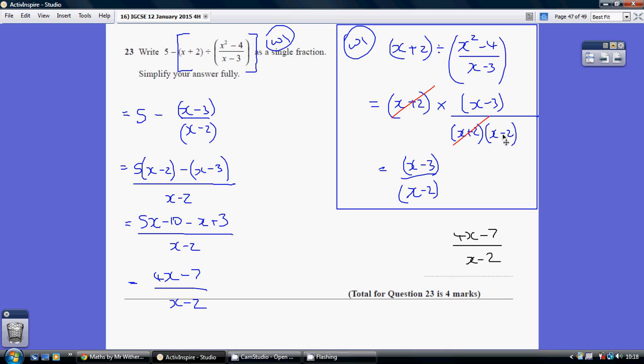So we get to that second line here. So basically on the numerator we've got x plus 2 times x minus 3 and on the denominator we've got x plus 2 times x minus 2. So clearly these two terms cancel leaving us just with x minus 3 over x minus 2.